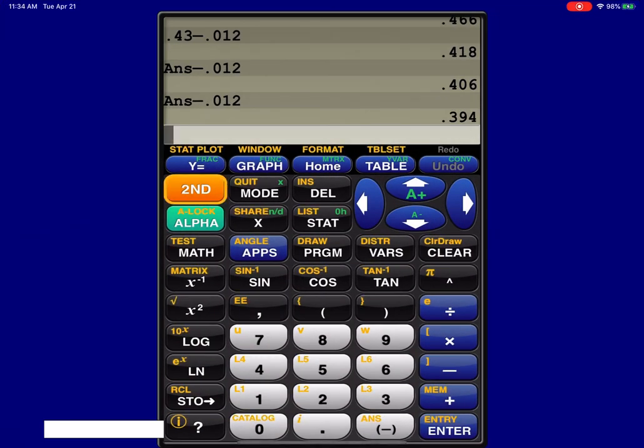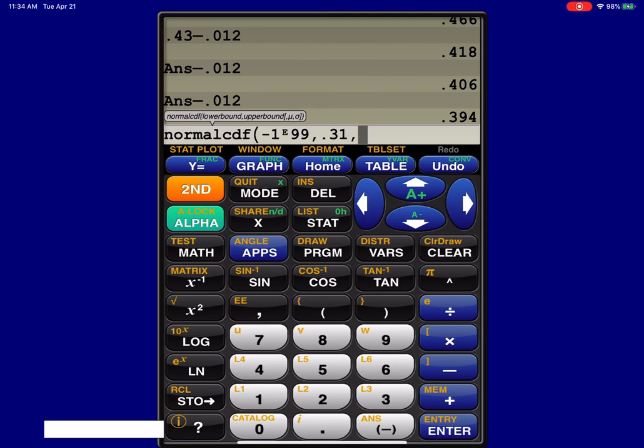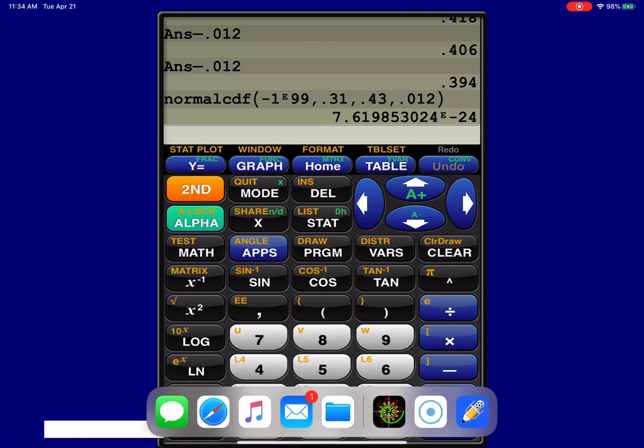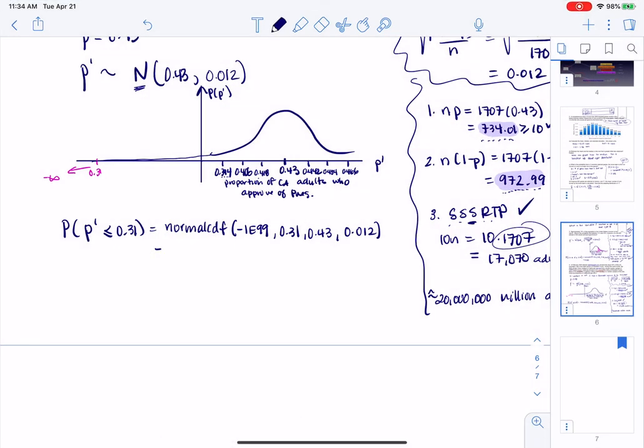Let me go crunch this. I'm going to do second vars, normal CDF. We're going to go negative 1E99, then I'm going to go 0.31, 0.43, 0.012. And I am expecting a zero, not quite a zero, but 23 zeros and then a seven. I'm going to round that to zero, real safe on rounding that to zero. So this probability is zero.